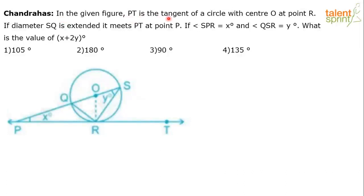In the given figure, PT is the tangent of a circle with center O at point R. SQ is the diameter of the circle. If the diameter SQ is extended, it meets PT at point P.